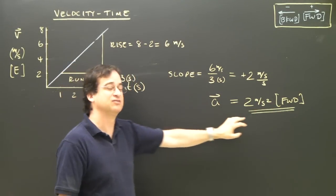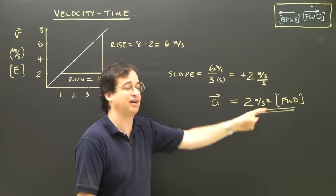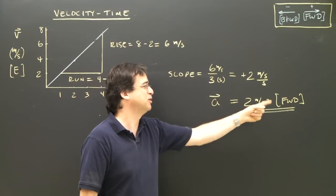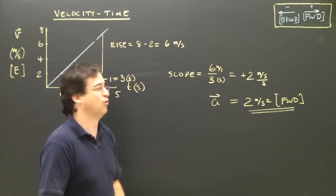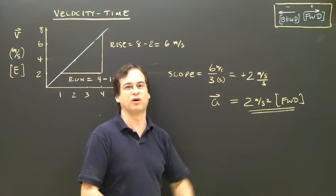The slope of a VT graph gives us acceleration, and in this case I calculated it was positive, so 2 meters per second squared forward, or 2 meters per second squared east.